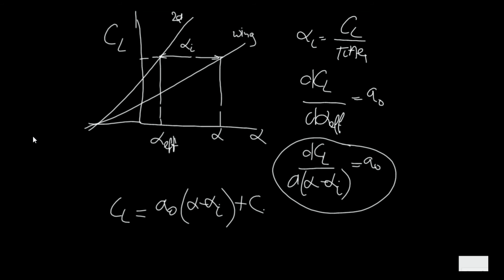Or written differently, CL is a0 times alpha minus CL divided by pi A e1.